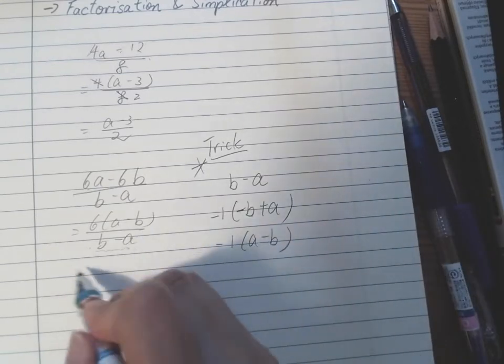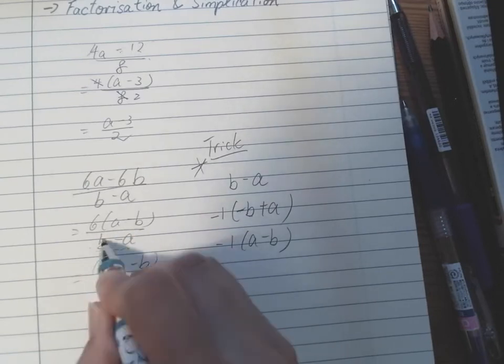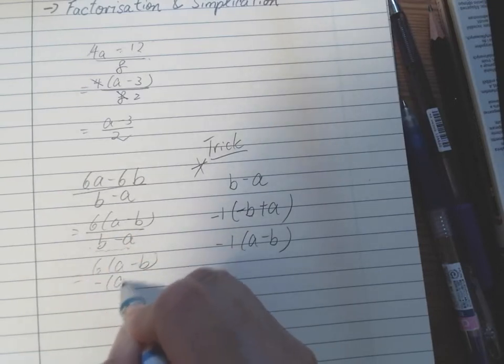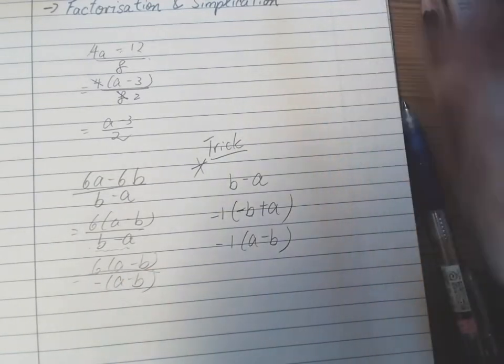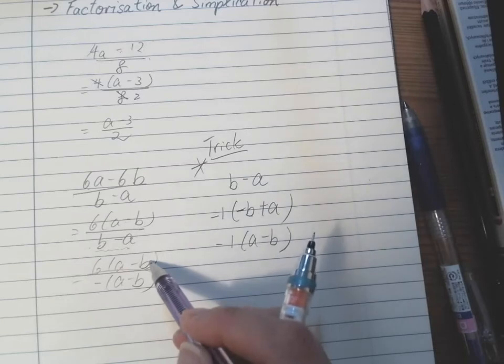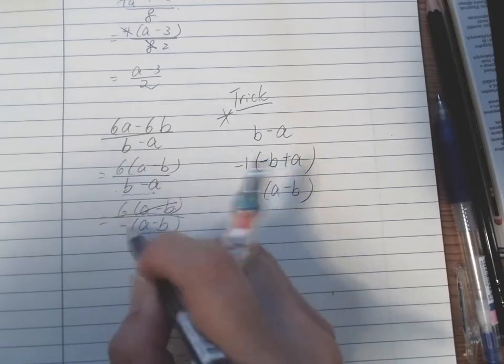So what we're going to do is transform the places, rearrange it using the negative. Then we have (a minus b), and now we can cancel the terms out because they're totally the same. Especially with subtraction, you'll have to fix it a little bit. So we have (a minus b) cancel out, leaving the negative here.